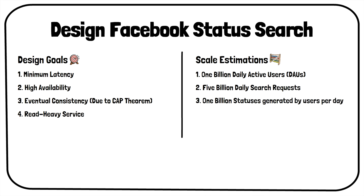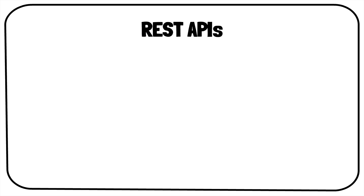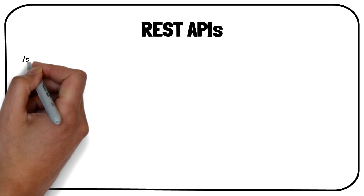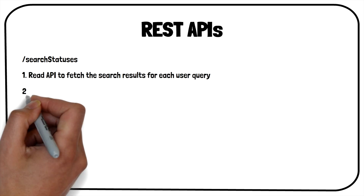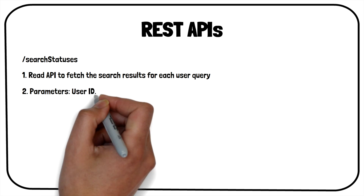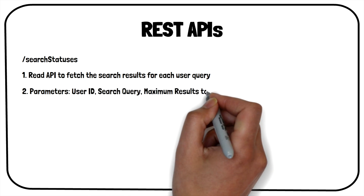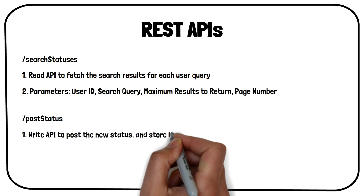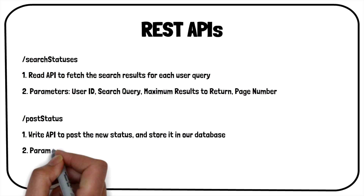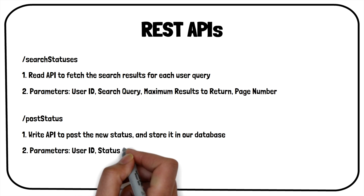Let us discuss the REST APIs that we will be developing for this problem. To interact with the system, we will need 2 APIs. The first one is the status search API — a read API to fetch the search results for each user query. The client will send user ID, search query, maximum results to return, and page number as the request parameters. The second one is the post status API — a write API to post the new status and store it in our database. This API requires user ID and status content as the parameters.